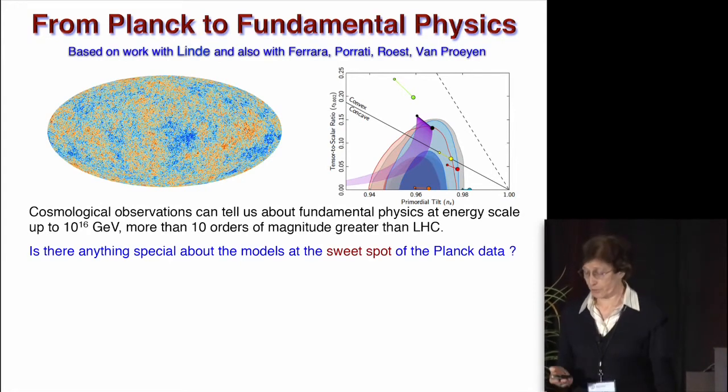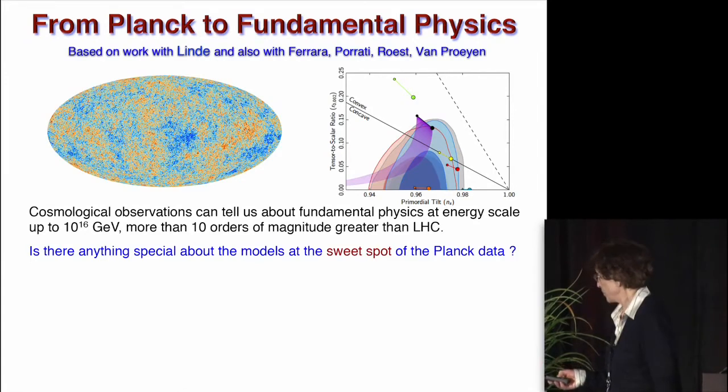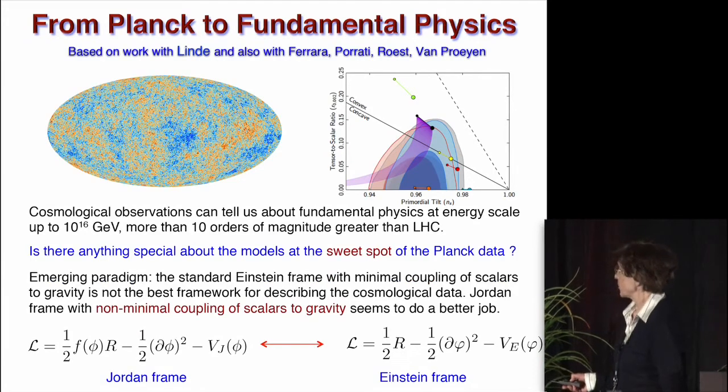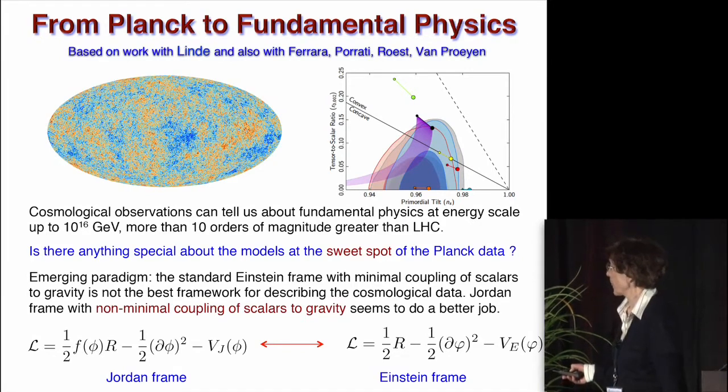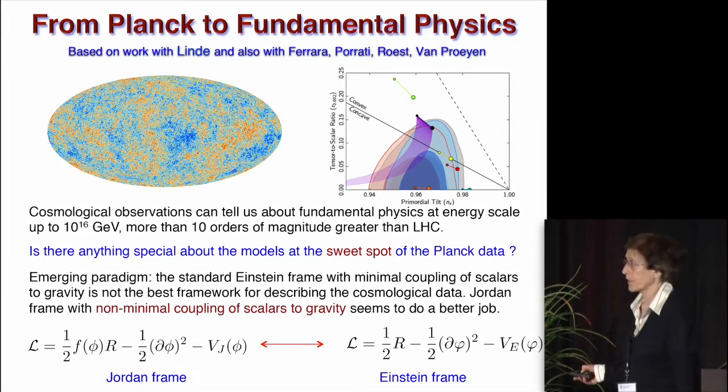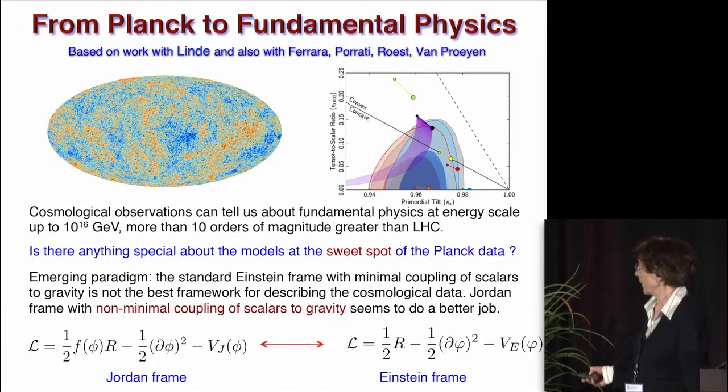And the answer is not what something which we expected a little bit ago. So the paradigm which seemed to emerge is the following: that the standard Einstein frame, which has minimal coupling to scalars, and everybody has seen this Lagrangian, one half R with Planck equals one, we have a canonical kinetic term for scalar and we have some potential. It is this potential which codifies all information which we compare with this primordial tilt and ratio of tensor to scalar fluctuation.